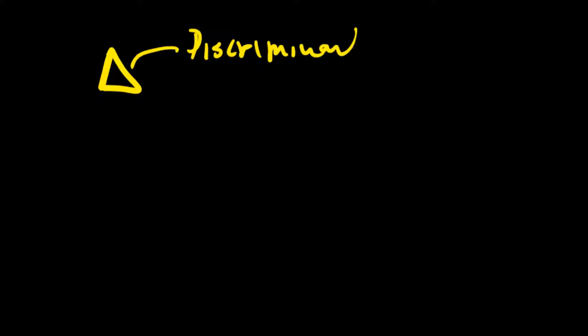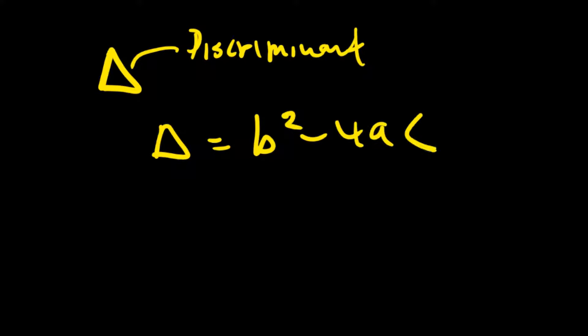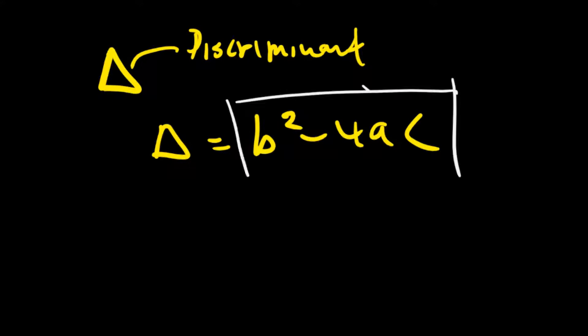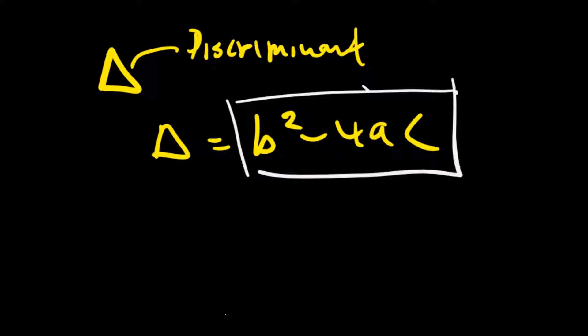One thing you need to note is that we normally use a discriminant when talking about nature of roots. A discriminant is equal to b squared minus 4ac. You're probably familiar with b squared minus 4ac, which is found inside the quadratic formula. So the discriminant equals b squared minus 4ac.